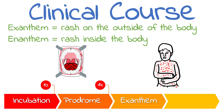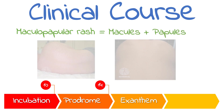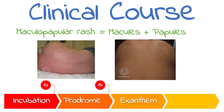Four days after the onset of symptoms the exanthem occurs. The rash in measles can be described as a maculopapular rash, meaning it's a mix of both macules and papules. Macules are flat discoloured spots less than one centimetre, while papules are elevated solid lesions less than one centimetre. The rash originates on the face and then spreads towards the trunk and extremities, with the palms and soles rarely being involved. After four days the rash starts to fade.